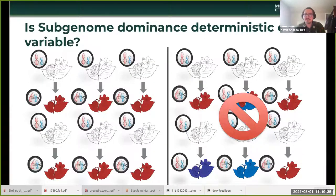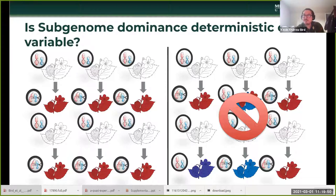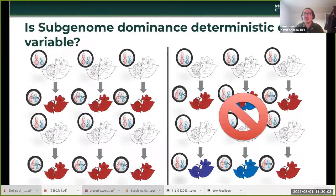Getting back to the original question of whether subgenome dominance is deterministic or variable at the expression and methylation level: it seems to be mostly deterministic, mostly playing out the same way. Specifically, 70% of genes were biased expressed in the exact same way in all lines and the parent. 30% is sizable, but the overwhelming pattern is constrained to act the same way across these independent origins.